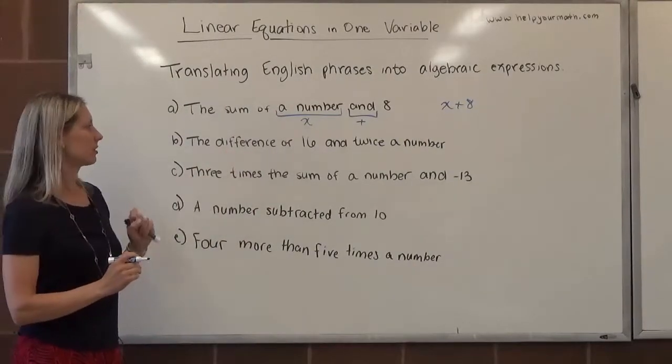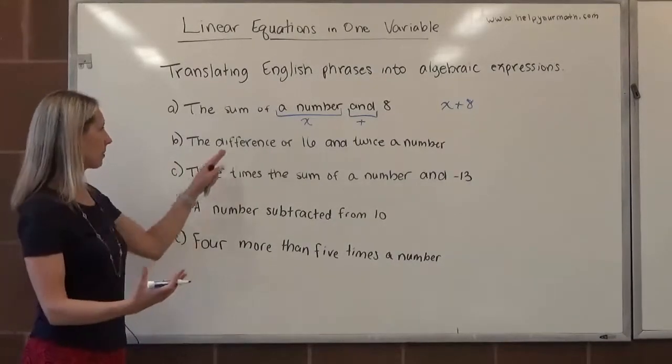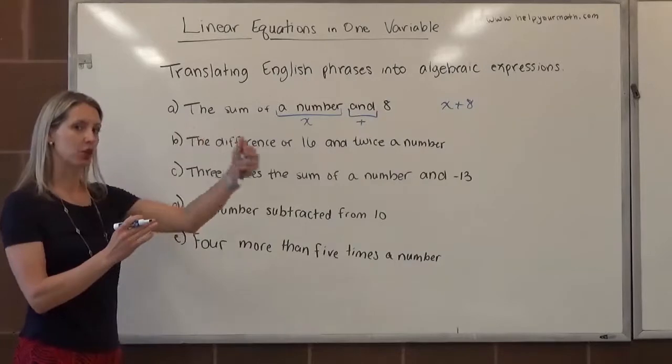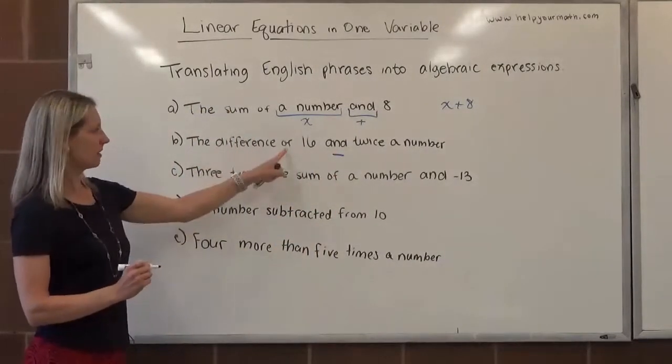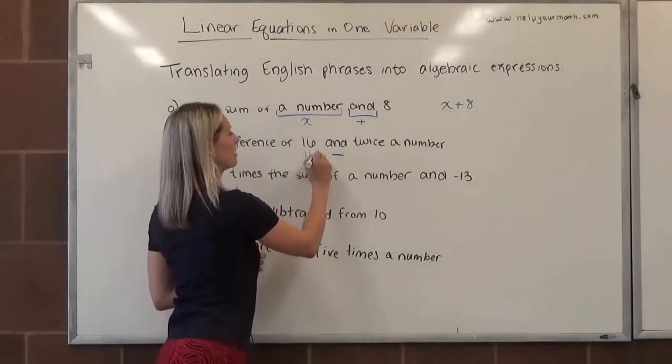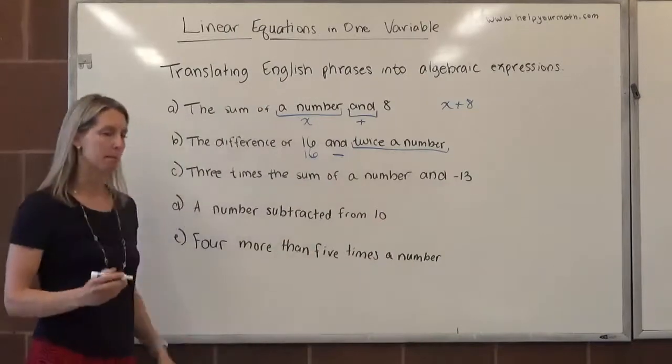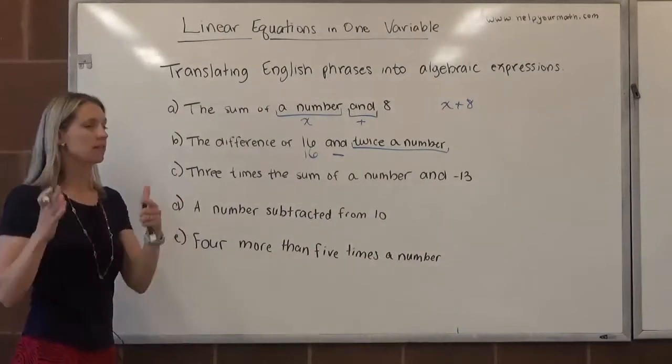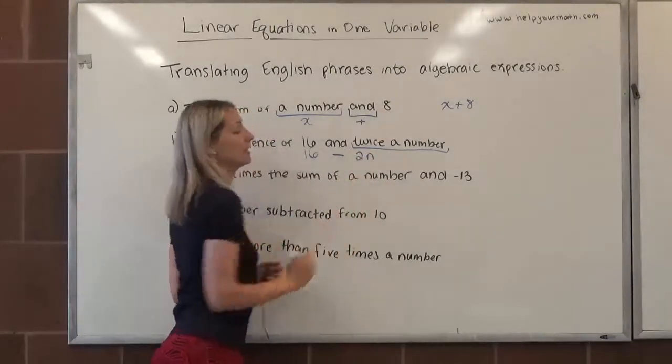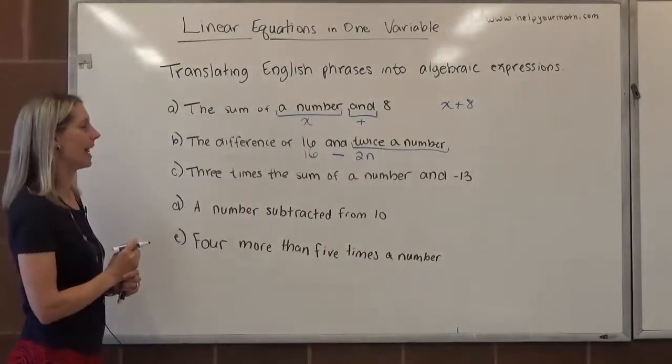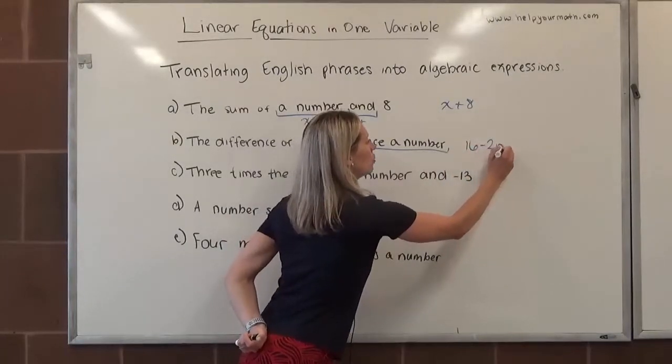Letter b, the difference. This is another key word, difference implies subtraction. Generally, what we're looking for is that difference occurs at the and. So here's my and right here, that's where the subtraction is. It's going to be the difference of, here's the first part, 16. Here's the second part, twice a number. Twice indicates times two, so we would say two times, and I'll get fancy here and use a different variable, we'll say n. So this would translate to 16 minus 2n.